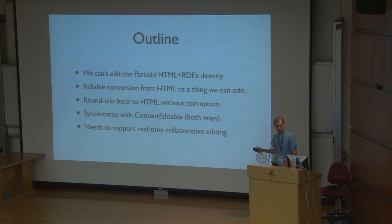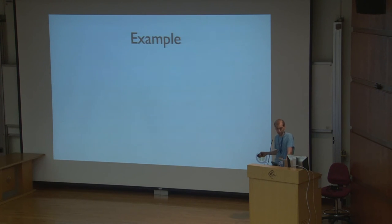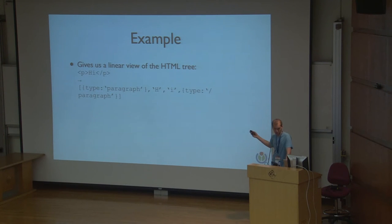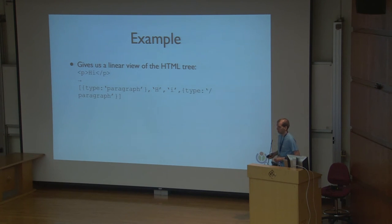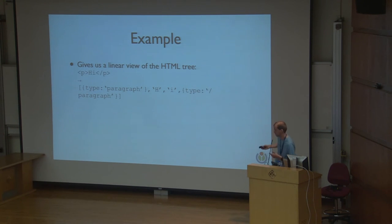We've used a lot of terms here. Let me show you an example because that's usually the best way to understand it. What we get from Parsoid is a big HTML tree. We completely flatten it, so your whole HTML document just becomes one long array. That lets us do things like transactions, which are mini-diffs within the document, really easily. So if you select the word 'hi' and type in 'x', you can just say: move forward one, remove 'hi', insert 'x'. That becomes a mini-diff in your transaction history that you can undo and redo.